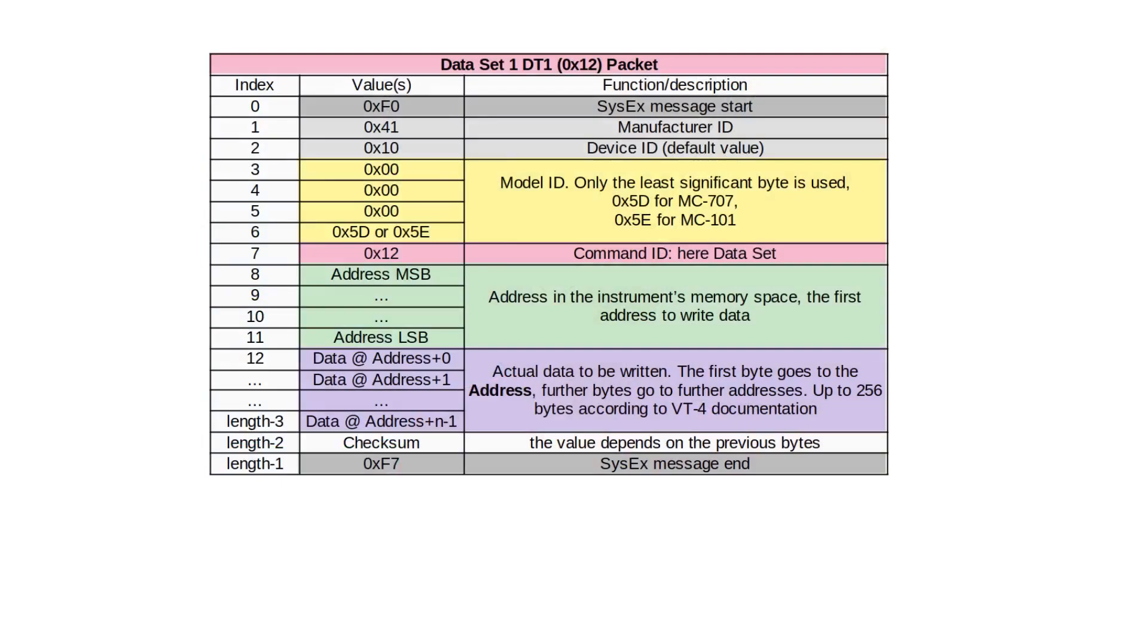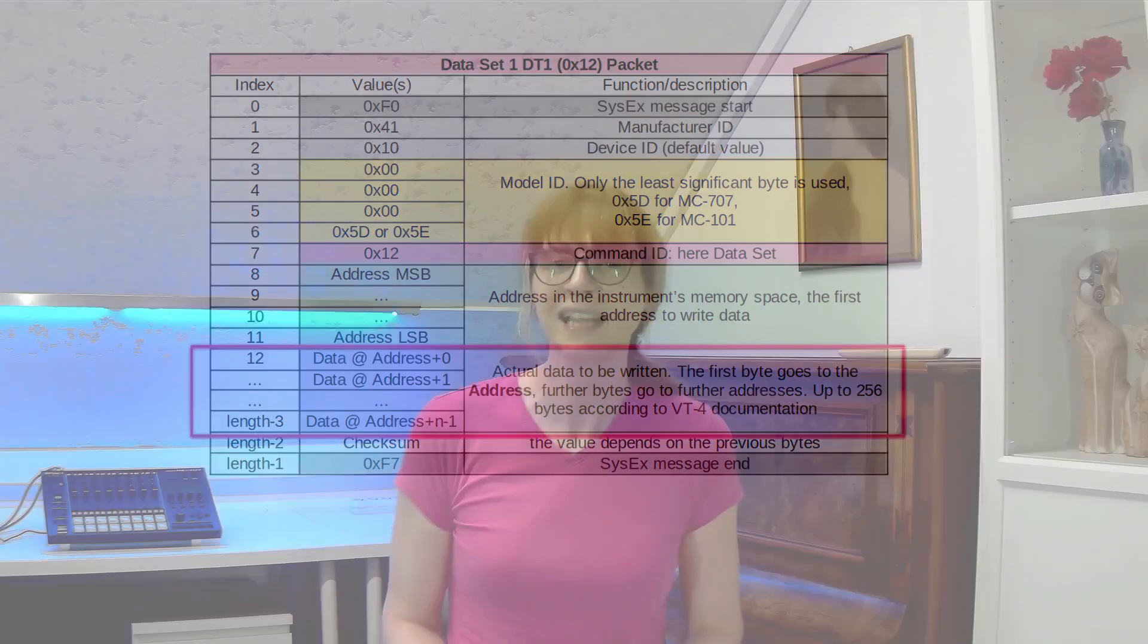As a response you will get the data set or DT1 message. You can also use the DT1 message to set the internal parameters of the Roland instrument. DT message structure is shown here on the screen. Here the byte that allows the instrument to distinguish the message is 12 hexadecimal at index 7. And again you specify the address to write the data but this time you specify explicitly the data that you want to write. Each next byte of data fields will be written at the next higher address.